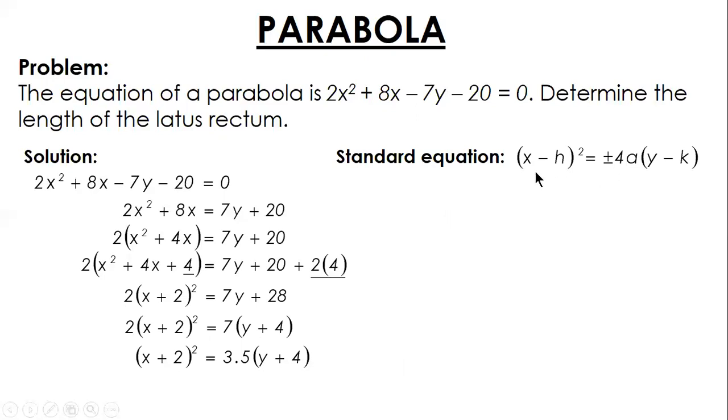From this, as you can see, there is no numerical coefficient on the left side. That is why we divided by 2. And this is our latus rectum, 4a. Based on this, our latus rectum is 3.5. Since 3.5 equals 4a, then our a is 3.5 over 4, and that's 0.875.